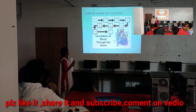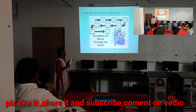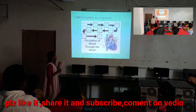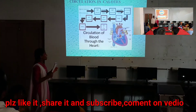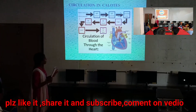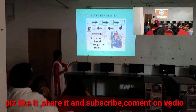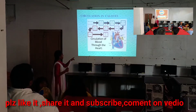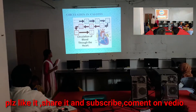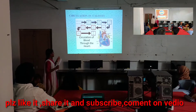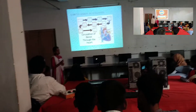Circulation in frogs: from the superior vena cava to the right ventricle, by pulmonary control to the lung, from the lungs to the left ventricle and aorta throughout the body — this is the circulation pathway.